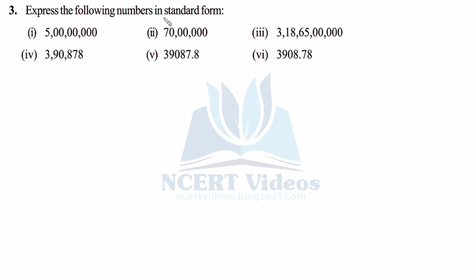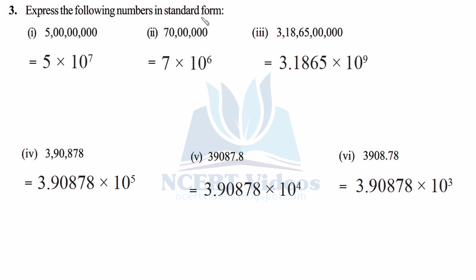Question 3: Express the following numbers in standard form. What is standard form? In this exercise we deal with very large numbers — like distances to planetary objects — so it is cumbersome to write them out fully. We convert them into standard form: you write the number to base 10. For example, 5 followed by seven zeros — you write 5 into 10 raised to power 7 because it is 5 crore. For 7 followed by six zeros, you write 7 into 10 raised to power 6.